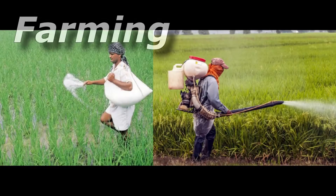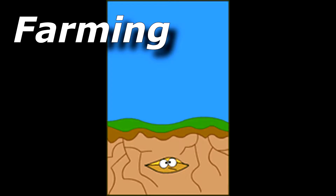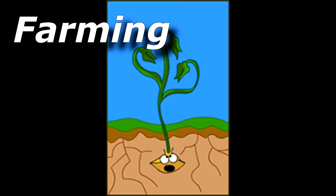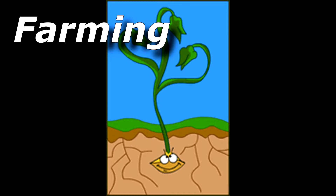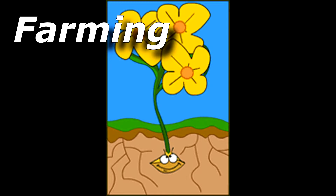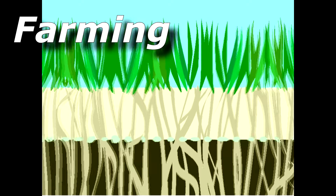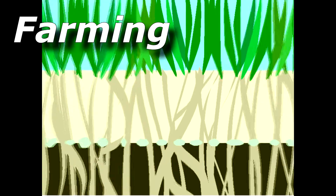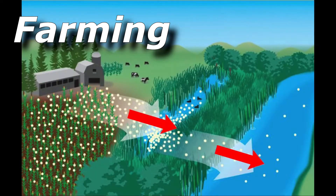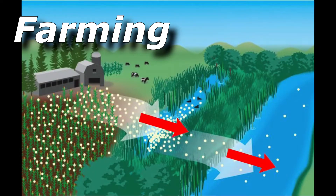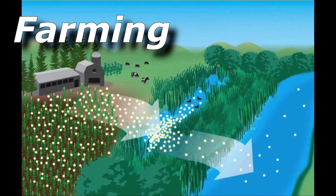Farmers use fertilizers and pesticides to get good yield from crops. Fertilizers get dissolved in water and absorbed by plants. But plants can absorb only a certain amount of fertilizers, and when excessive fertilizers are used, some amount stays dissolved and gets washed away to water sources. This results in water pollution.